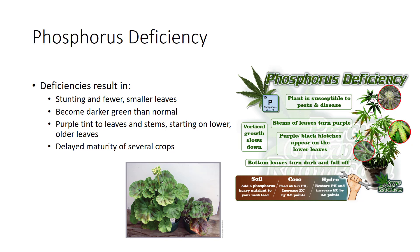For some plants, stunting without other obvious symptoms is typical. A phosphorus shortage may delay the maturity of several crops, including corn, cotton, soybeans, and others. Some crops, such as carrots, develop poor root systems. On the other hand, excess soil phosphorus ties up several plant nutrients, such as iron.